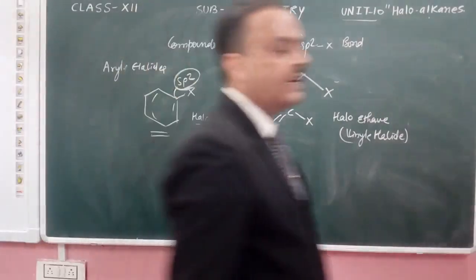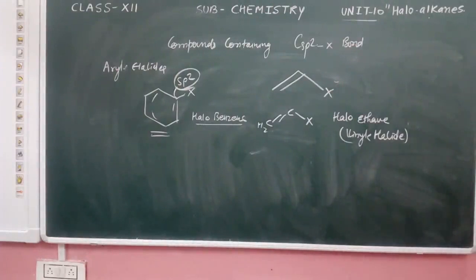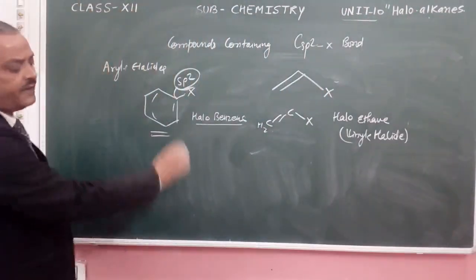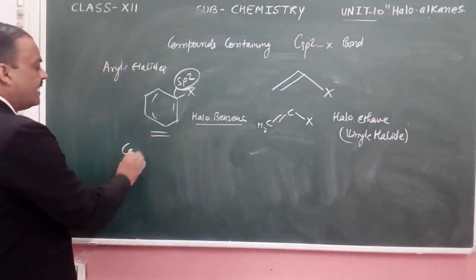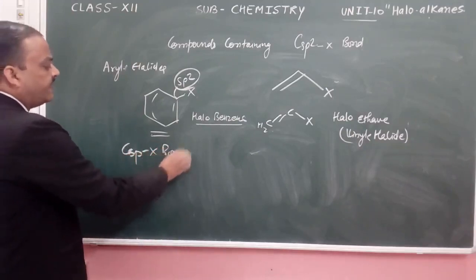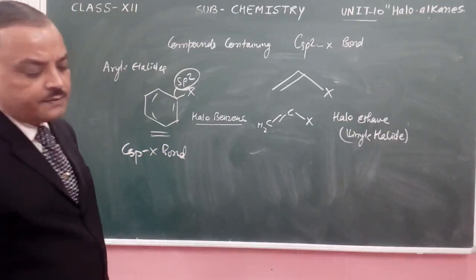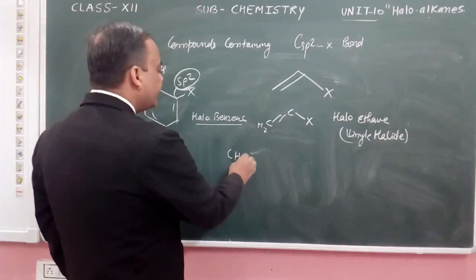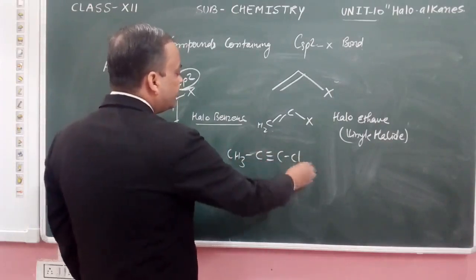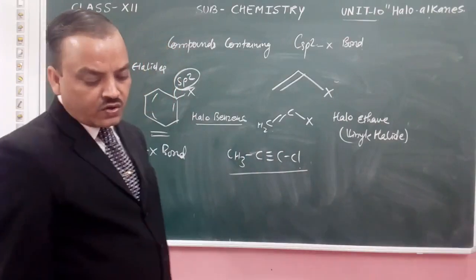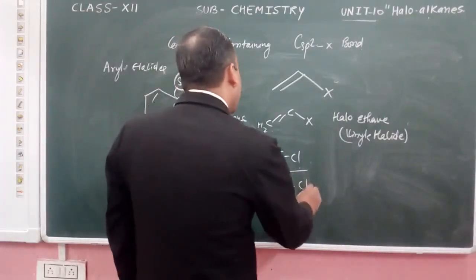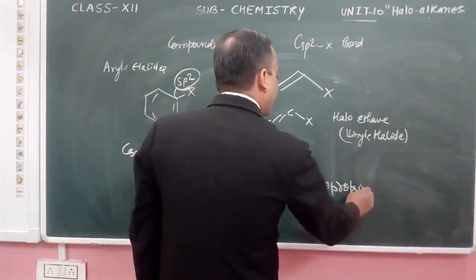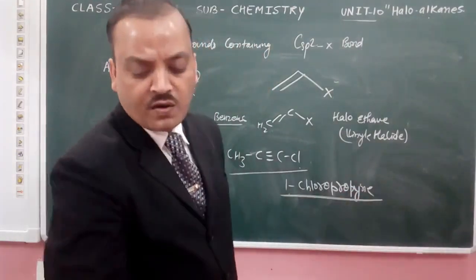In another condition where sp hybridization is present, we have a carbon–sp–halogen bond. It means the carbon has sp hybridization, such as in CH3–C≡C–Cl. This compound is called 1-chloropropyne, and that is the name of this compound.